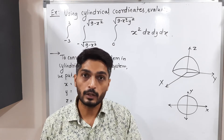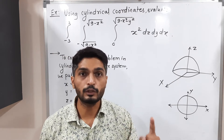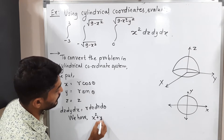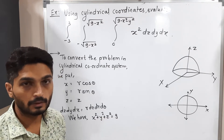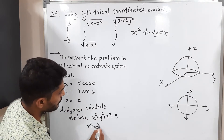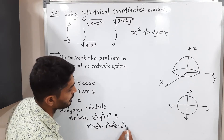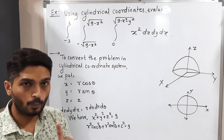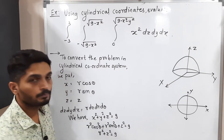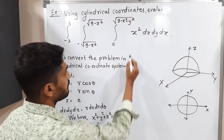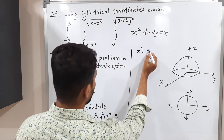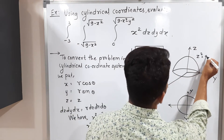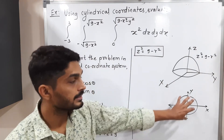We convert our equations to r, θ, z form. For the sphere x² + y² + z² = 9: substituting gives r²cos²θ + r²sin²θ + z² = 9, so r² + z² = 9, which means z² = 9 − r².